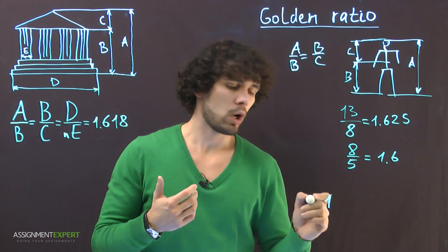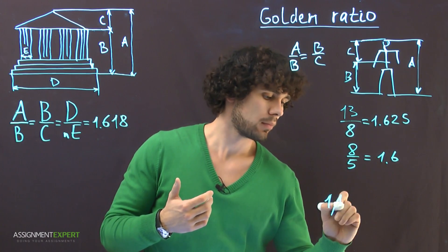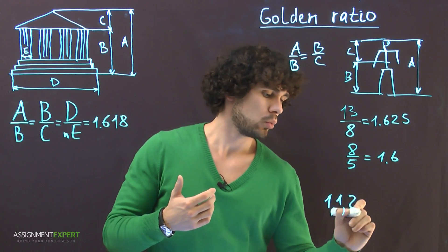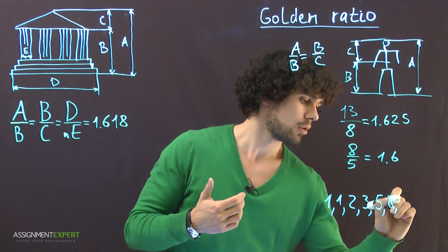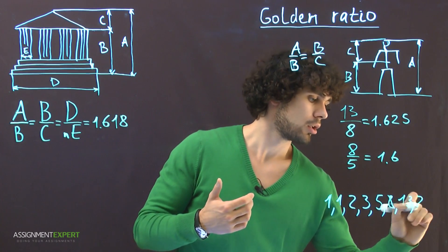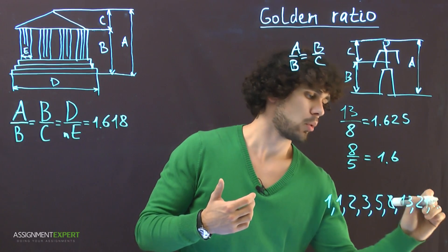So the sequence looks like this: 1, then 1 and nothing gives us 1, then we get 2, 3, 5, 8, 13, 21, and so on.